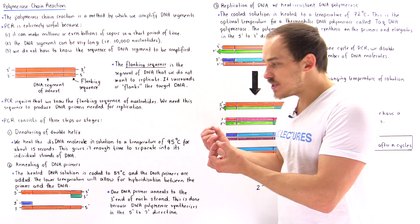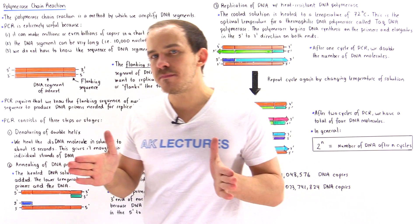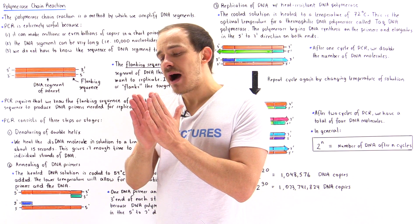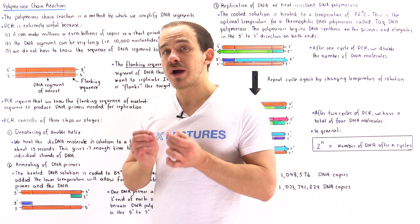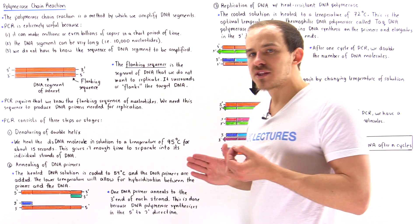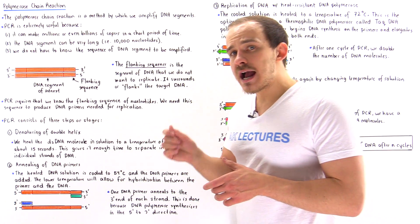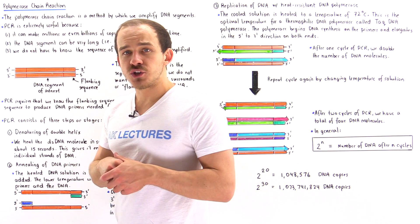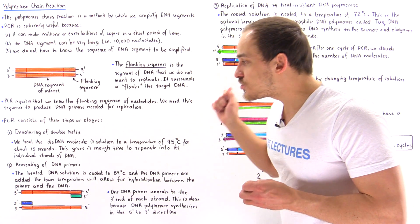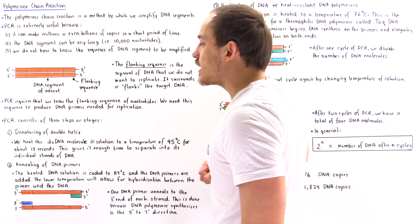The entire point of this reaction is to use a special type of DNA polymerase to replicate our DNA. To begin replication, the double-stranded DNA molecule must separate — we have to break the hydrogen bonds. One way to do this is to heat the solution containing that double-stranded DNA. If we heat it to 95 degrees Celsius for about 15 seconds, that's just enough to break all the bonds between the two strands and separate them.